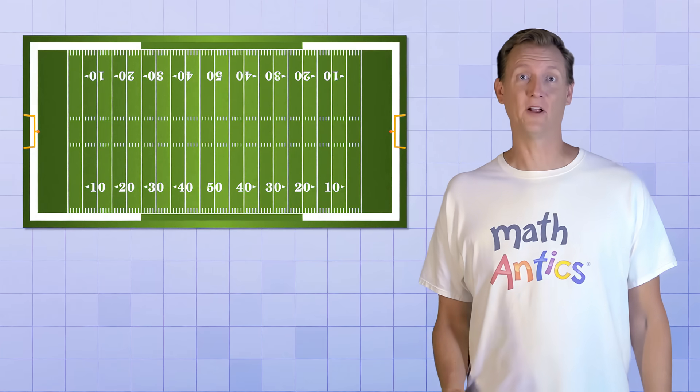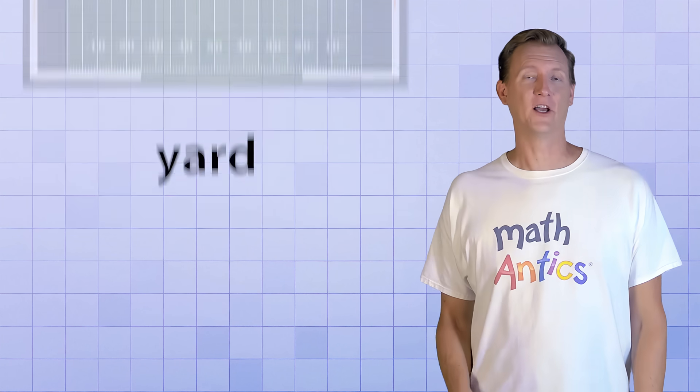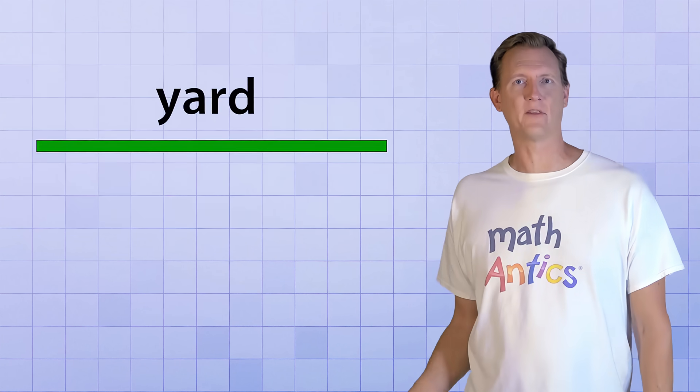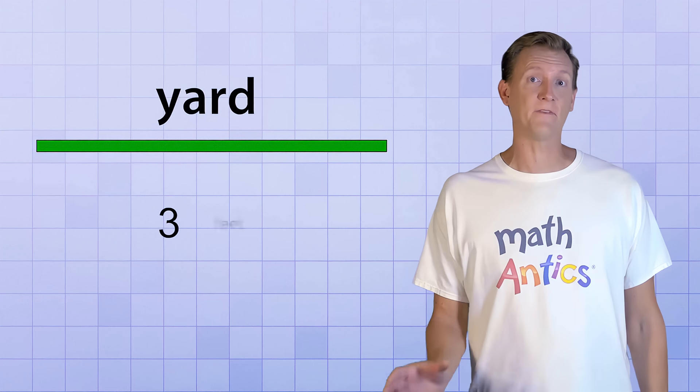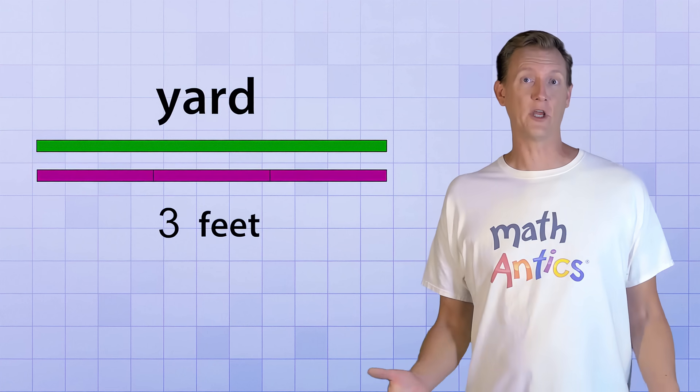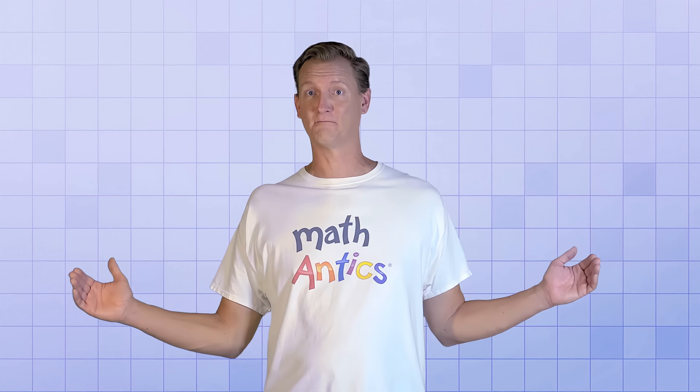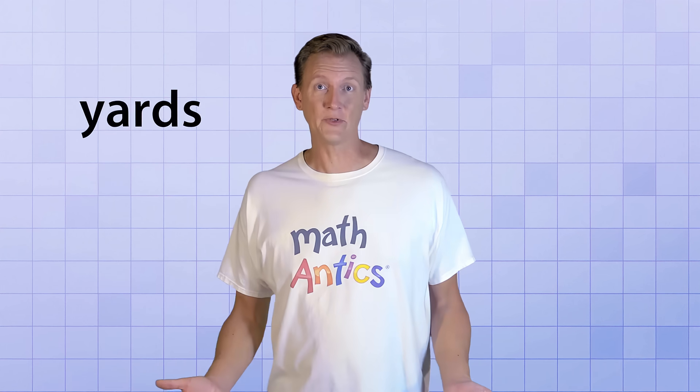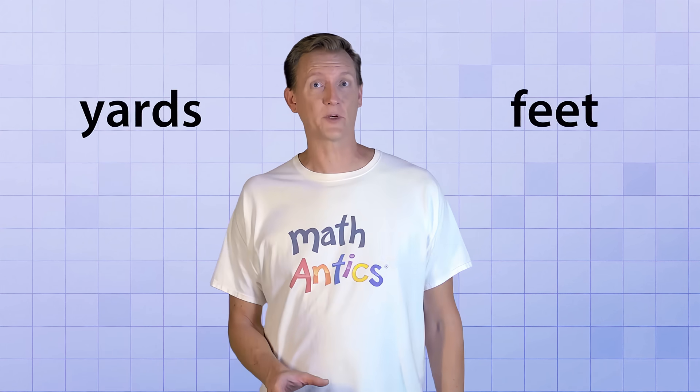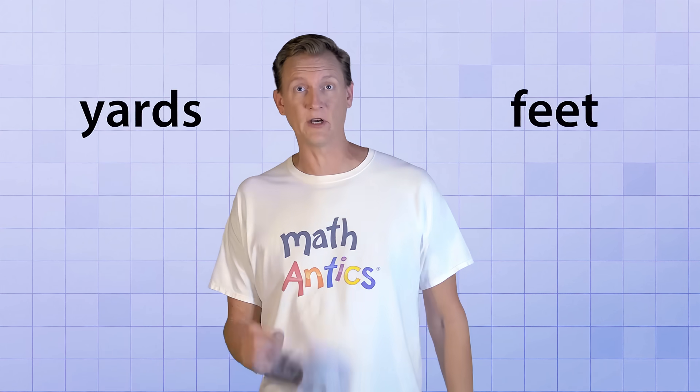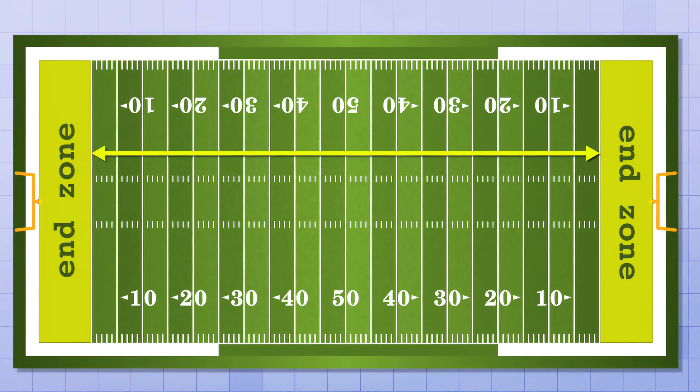Alright, but what if you want to measure something much bigger than a foot, like an athletic field? Well, that's what a yard is for. A yard is an English unit of measurement that's exactly the same as 3 feet placed end to end. So a yard is about this long. In general, yards aren't used as often as feet. But one place where yards are used all the time is in American football. Between the end zones, an American football field is 100 yards long. And those 100 yards are divided into subgroups of 5 yards each.